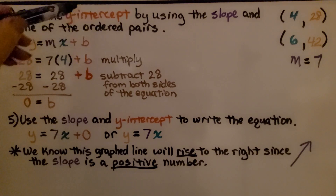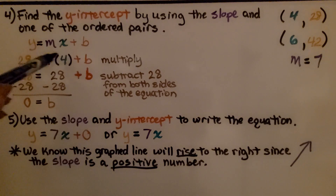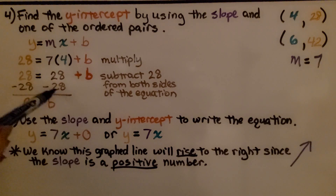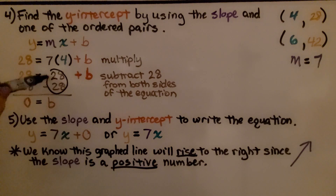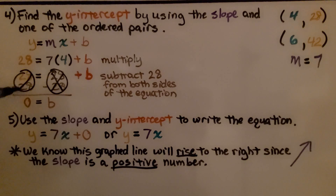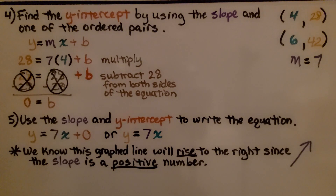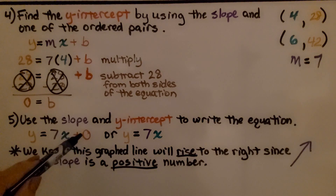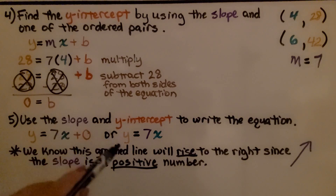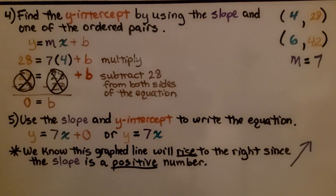We don't know what b is — that's the y-intercept we're looking for. We multiply and get 28, then subtract 28 from both sides of the equation. That creates zero pairs and eliminates those terms, leaving 0 = b. We now use the slope and y-intercept to write the equation: y = 7x + 0, or simply y = 7x.